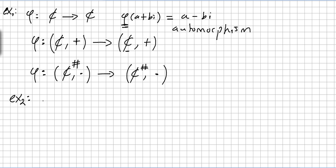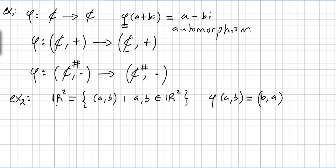A second example: in R², consider the set of pairs (a, b) where a and b are in R. The mapping phi(a, b) = (b, a) is an automorphism because it is an isomorphism that takes R² to R² under component-wise addition.